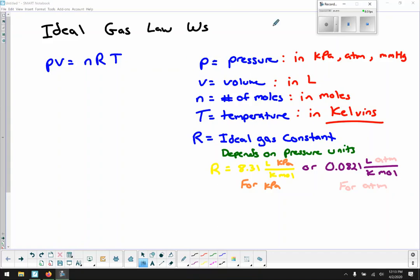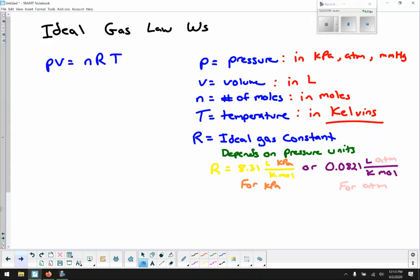So that is kind of a quick rundown of the Ideal Gas Law. So now let's get to some problems. So I'm just going to go through some of the problems on your worksheet. And again, I'm probably not going to go through all of them. And I will put a key to all of them up online with this video. So problem one, I have 4 moles of gas at a pressure of 5.6 atmospheres and a volume of 12 liters. What is the temperature?